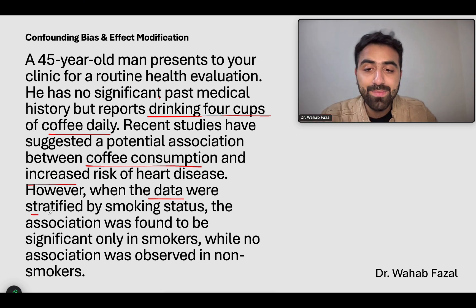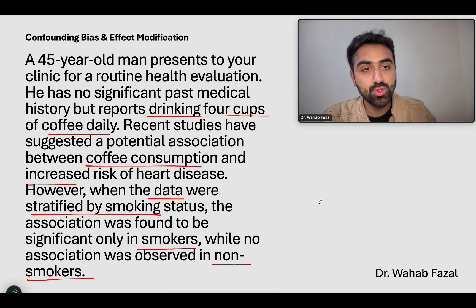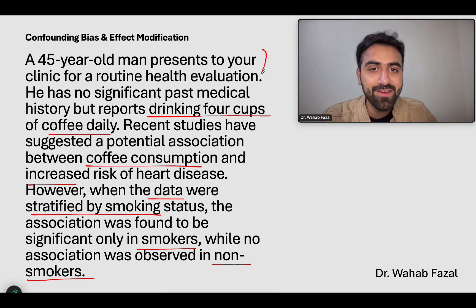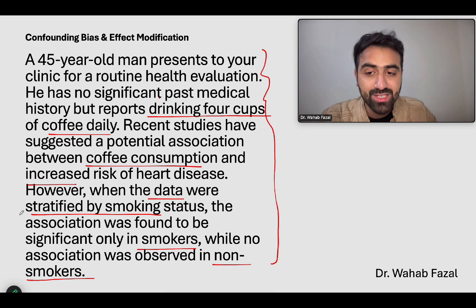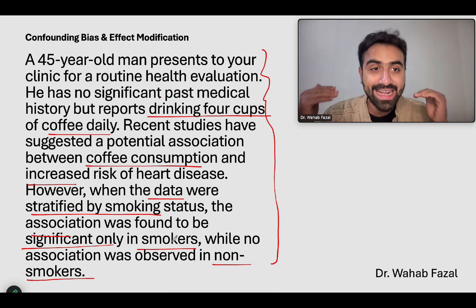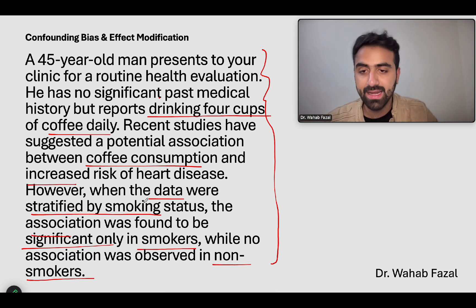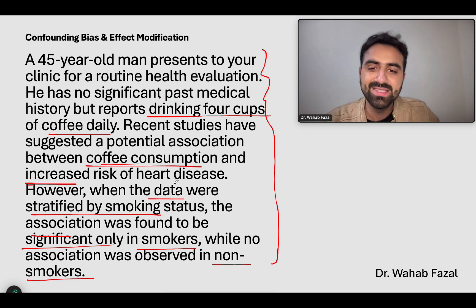However, when the data was stratified by smoking status, the association was found to be significant only in smokers, while no association was observed in non-smokers. This is usually the problem in biostatistics questions — they use complicated words like 'stratification by smoking status' and 'association was significant' to confuse you. That's the entire plan of the examiner. But let's not be confused; let's dissect this second part.